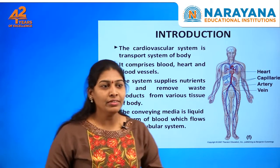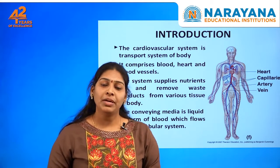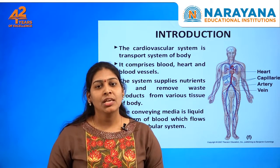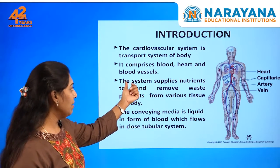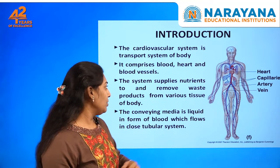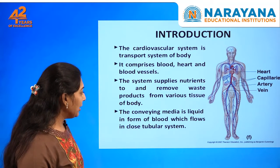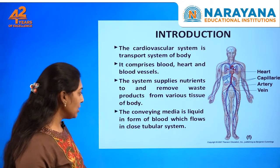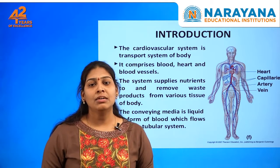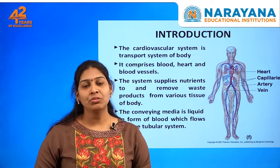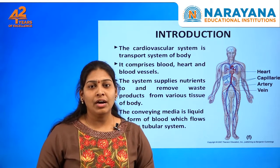The introduction here is about the circulatory system, that is the cardiovascular system, which is very important to pump all the nutrients. It comprises blood, heart, and blood vessels — the system which supplies nutrients and removes waste products from the various tissues of the body. The conveying media is liquid in the form of blood, which flows in a closed tubular system. In human beings, the circulation is a closed transport system, not an open transport system like in arthropods.